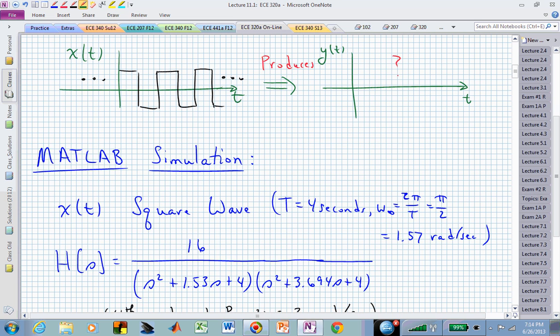Suppose x of t is a square wave, and specifically let's let the period of that waveform, or the first time that it begins repeating its pattern, let's say that happens every 4 seconds. The square wave now has a period of 4 seconds, that's related to our frequency in radians per second by 2π over the period, capital T, which if our period is 4 seconds, then we have an omega-naught equal to π/2, or approximately 1.57 radians per second.